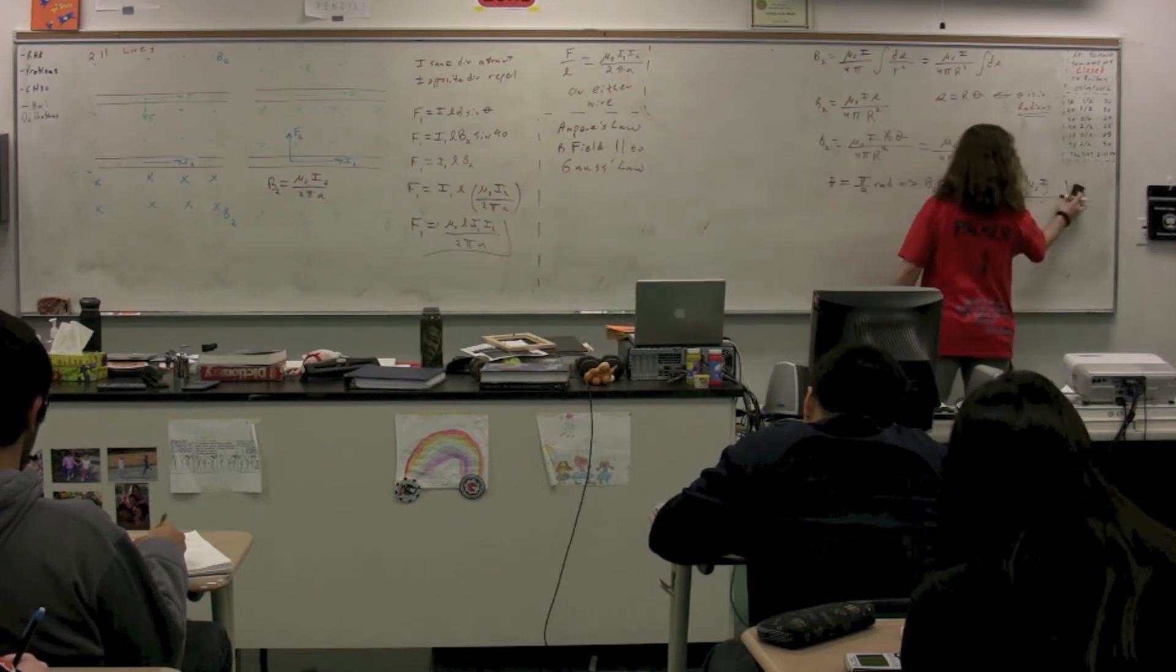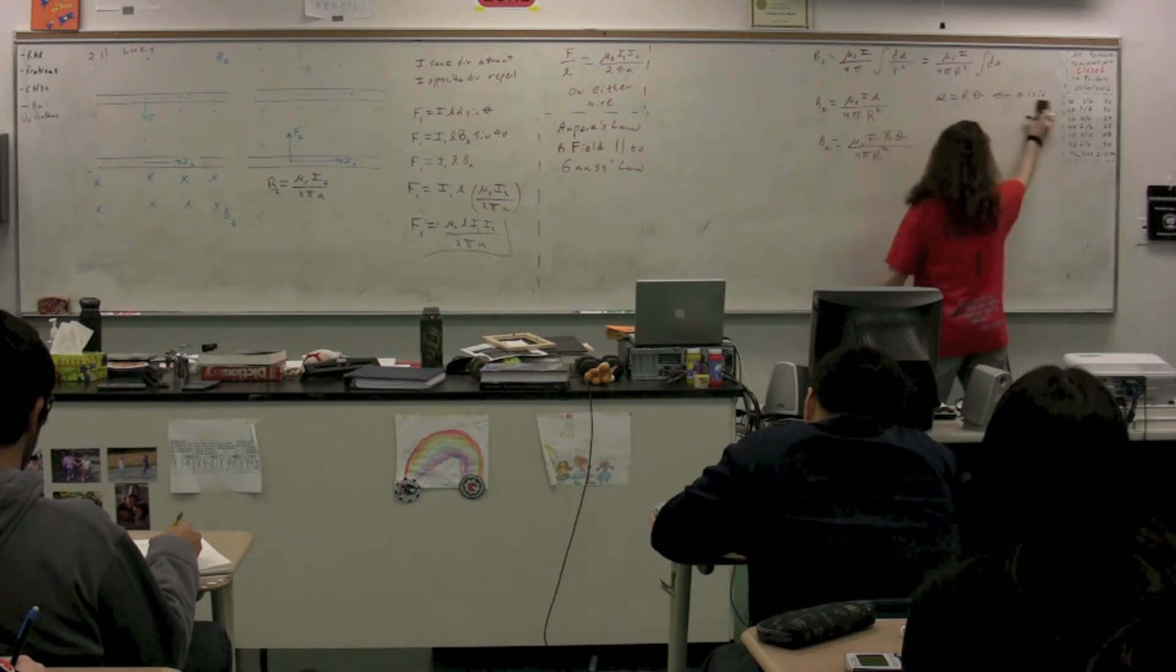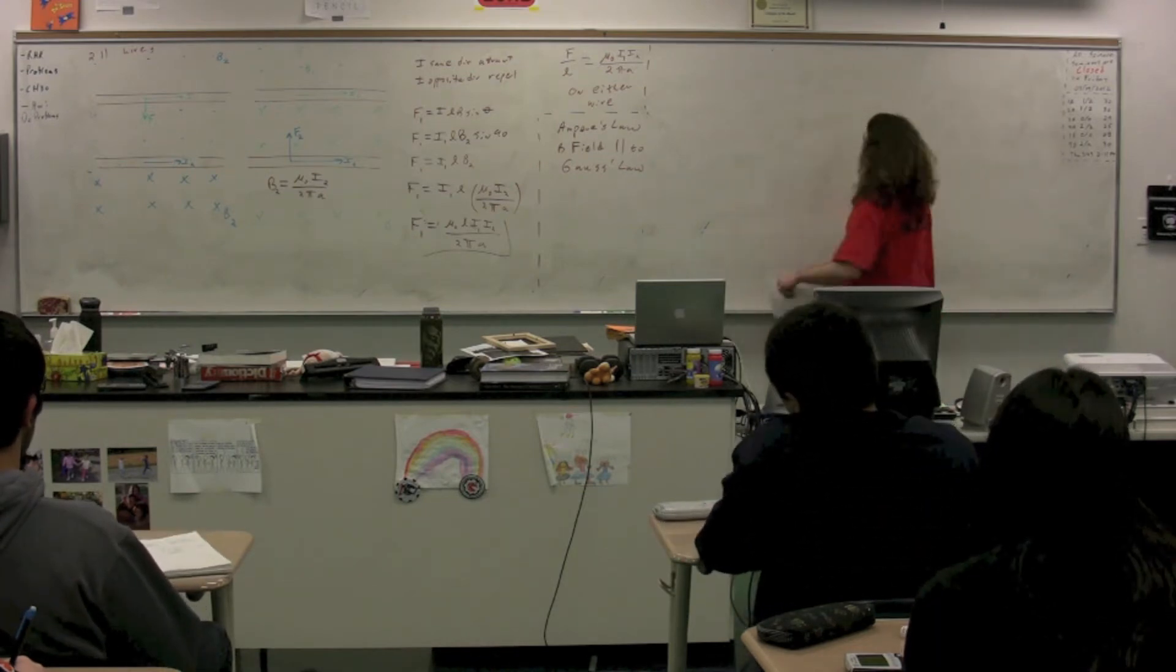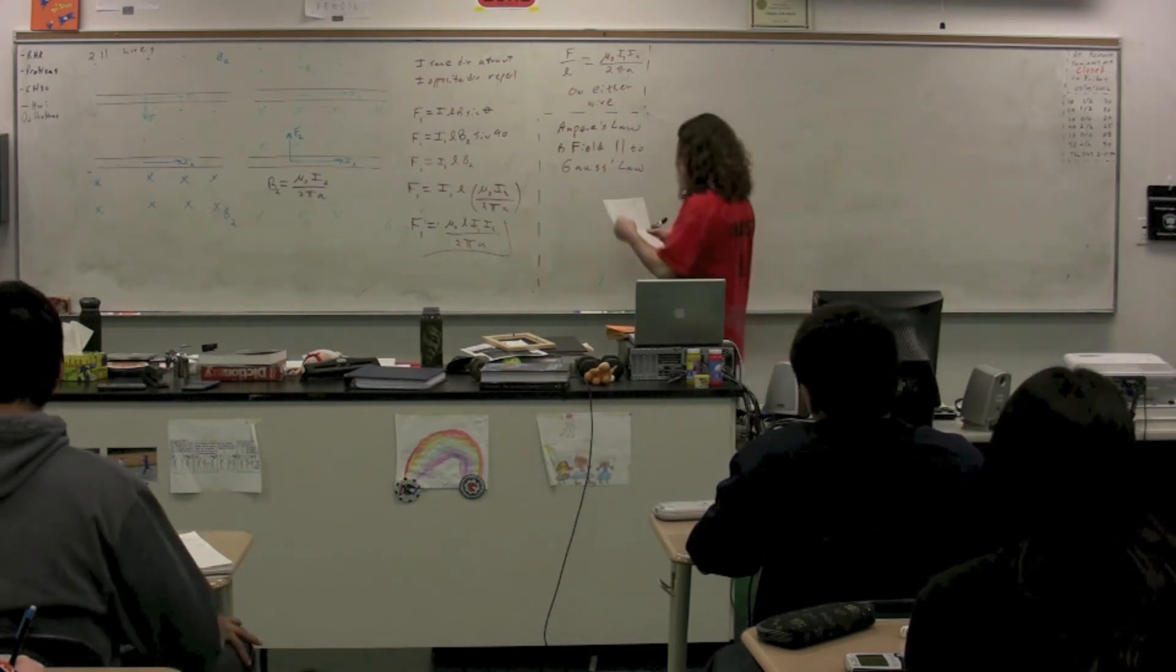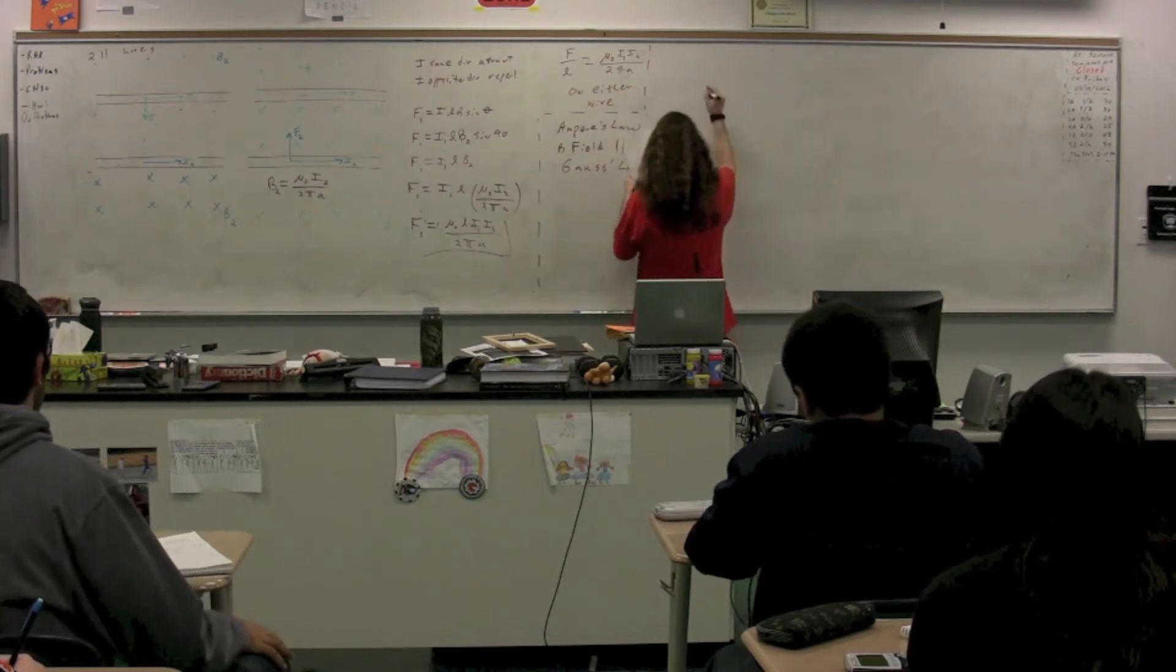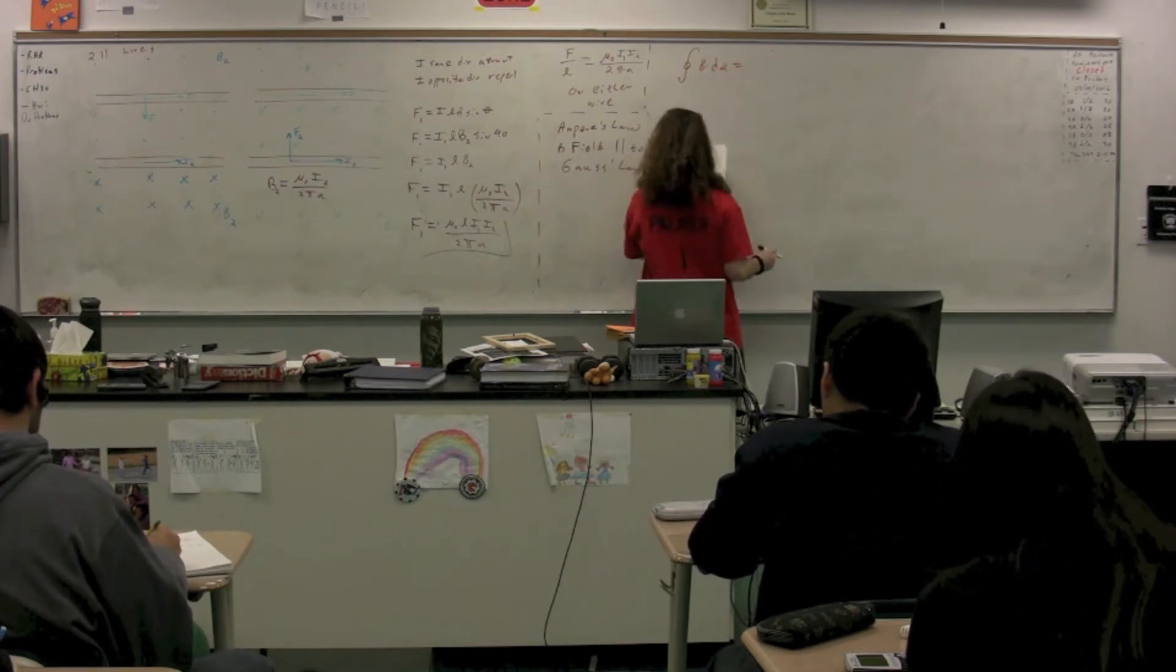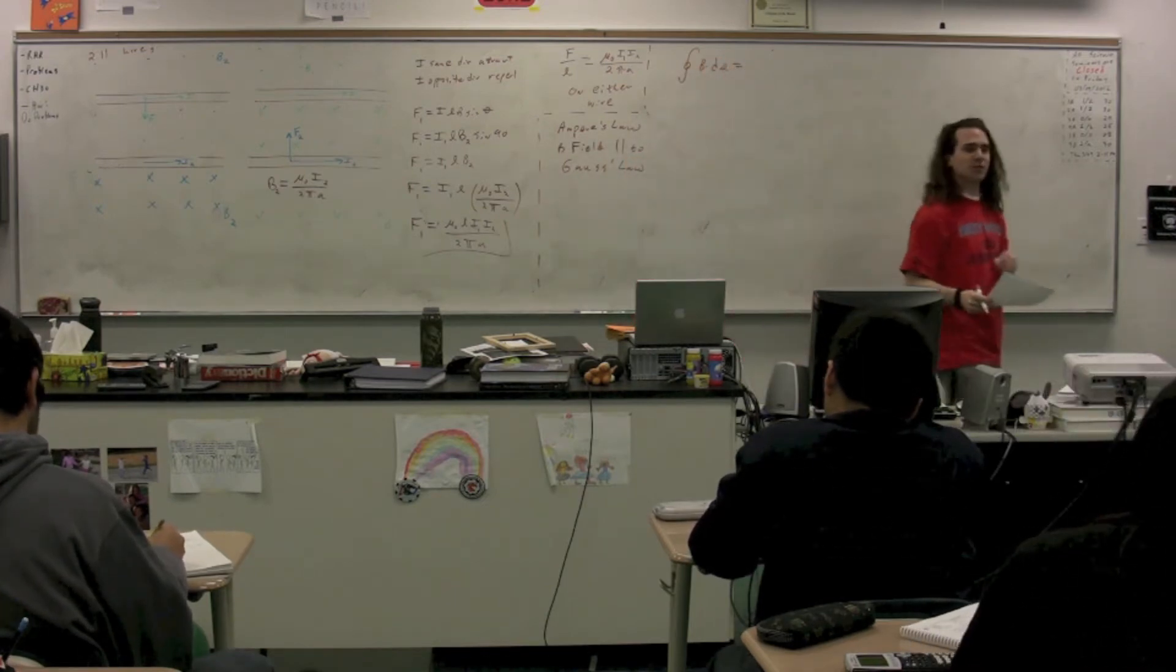We're going to go through and derive Ampere's law, and then at the beginning of class next time probably, we'll have time to use Ampere's law. Okay, here we go. So it is the closed loop integral B dot dS is equal to. Now, we need to go through and prove this law.